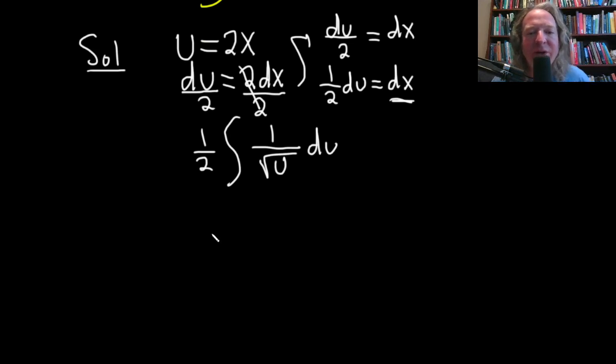We have to integrate this. We want to write it as u to a power. As a preliminary step, let's write that square root of u as u to the 1 half. So this is u to the 1 half du.